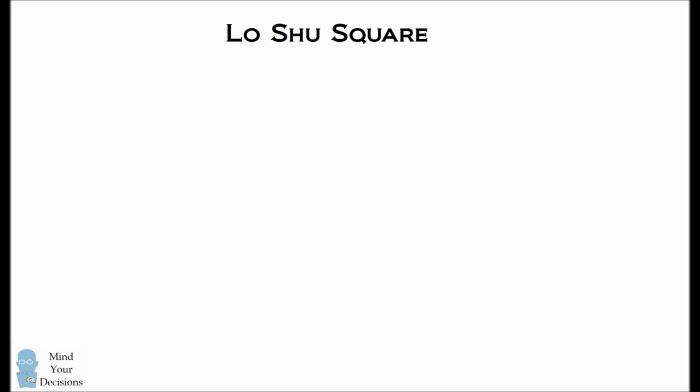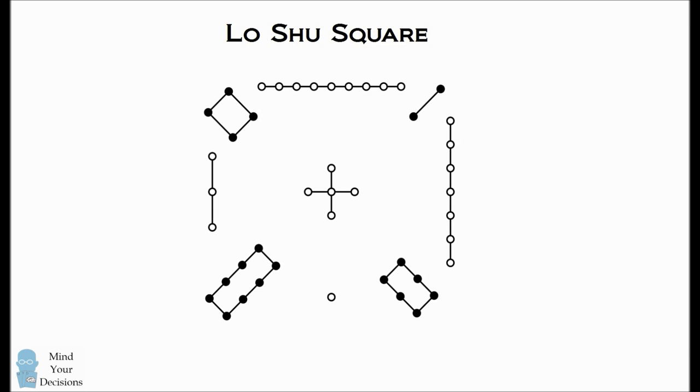According to Chinese legend, a magical turtle once emerged from a river with this special arrangement of dots and lines on its shell. There's a secret mathematical property to this pattern.